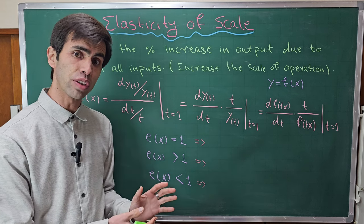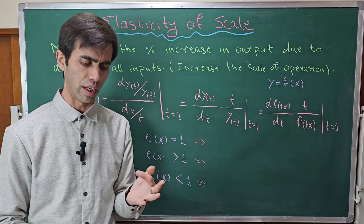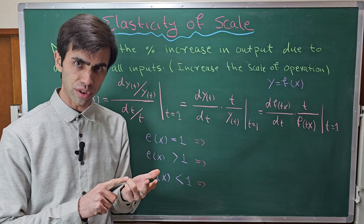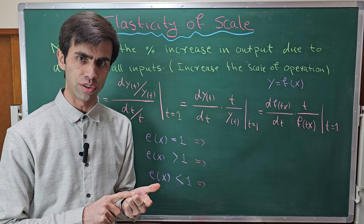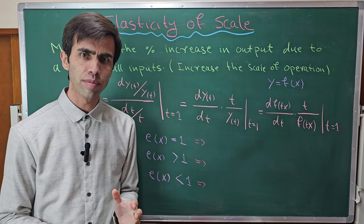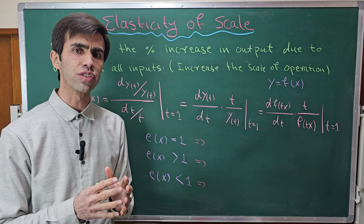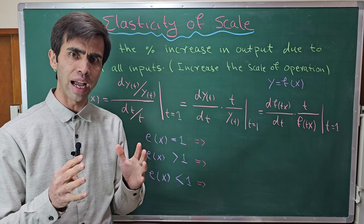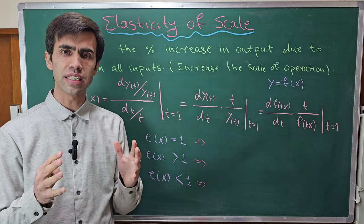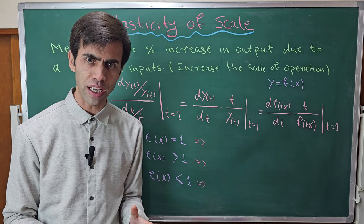In the previous videos we learned about returns to scale and three types: constant returns to scale, increasing returns to scale, and decreasing returns to scale. This elasticity of scale will help us to know what type of production function we have — whether it is increasing, decreasing, or constant returns to scale.